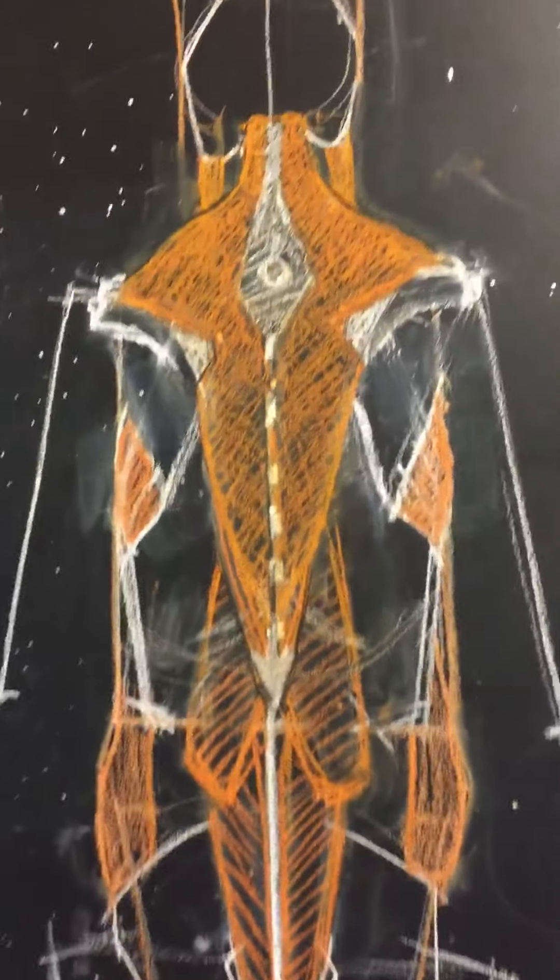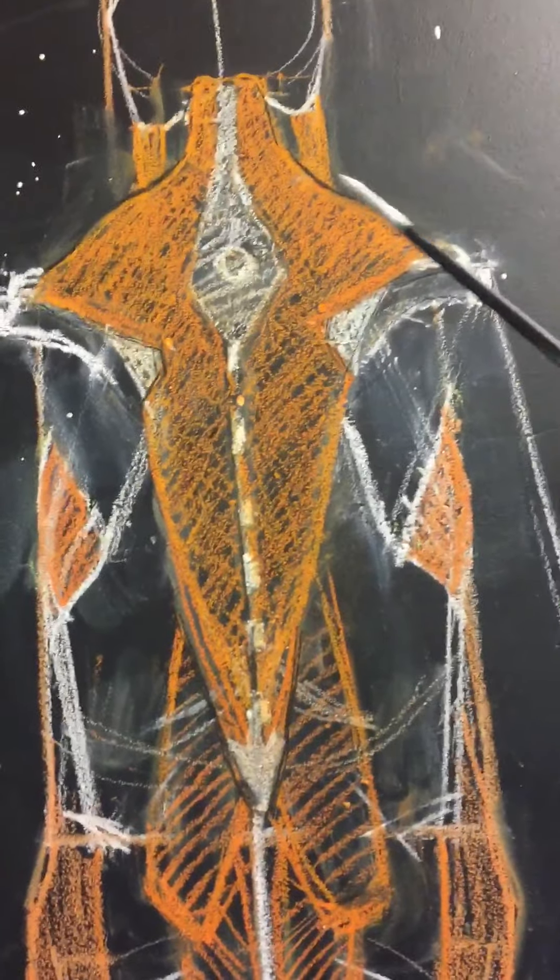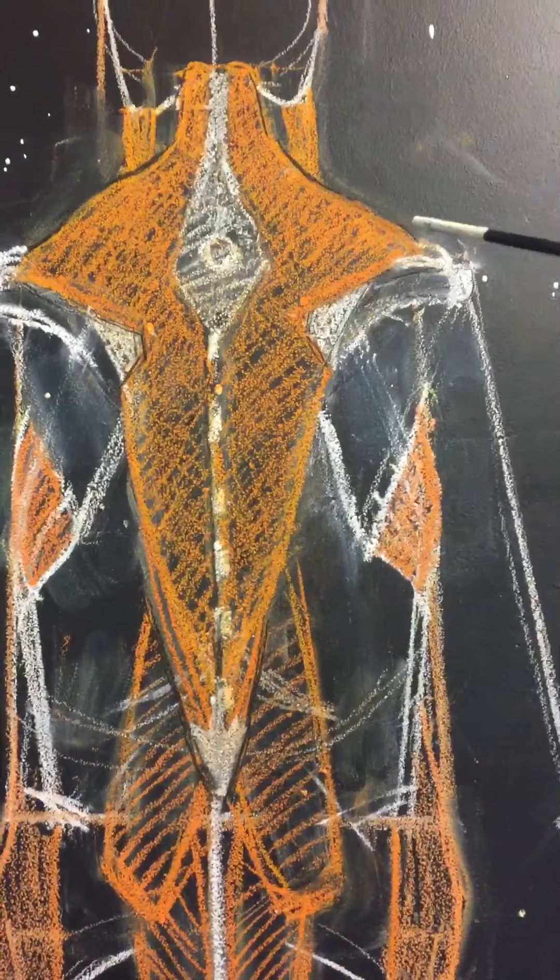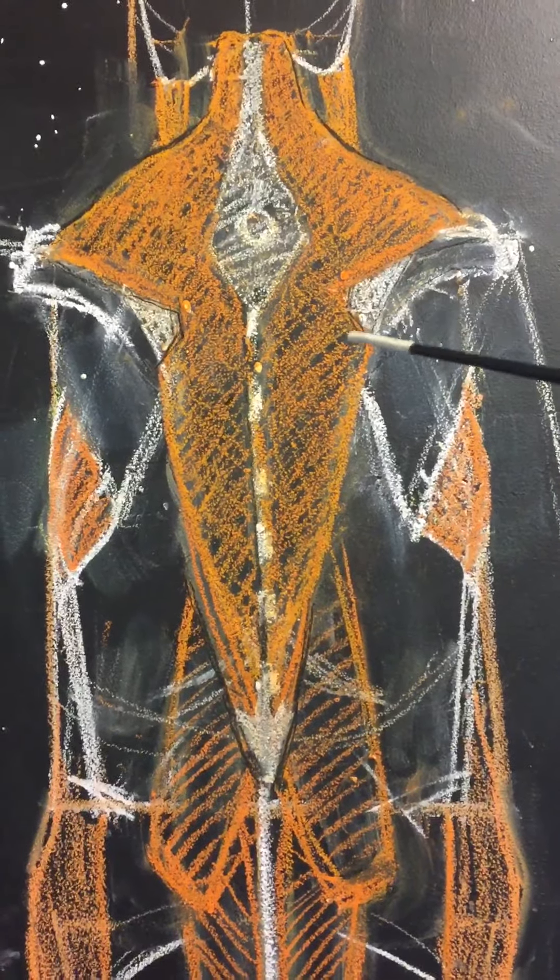The next muscle is the trapezius, which is a large diamond-shaped muscle that starts up at the base of the skull and attaches to both the clavicle and the spine of the scapula, and then it inserts along the spine.